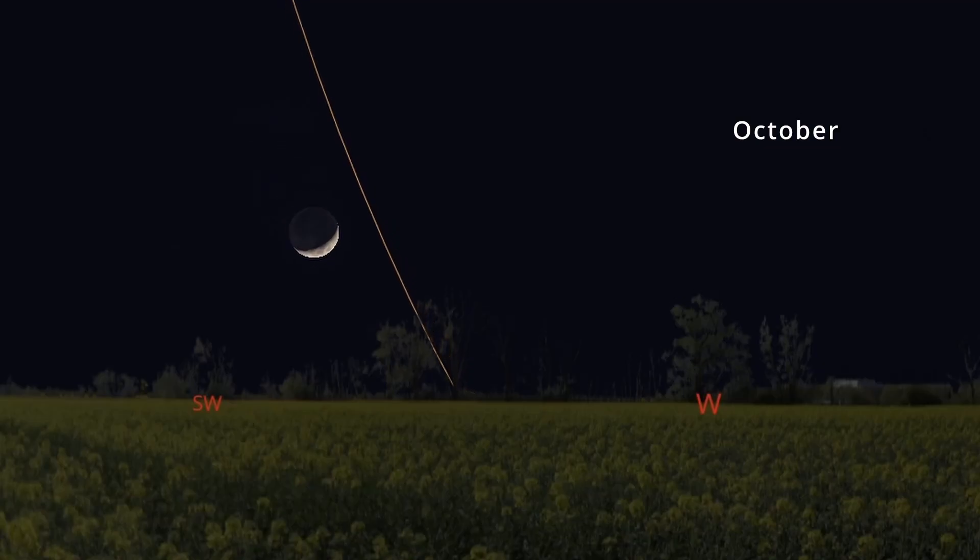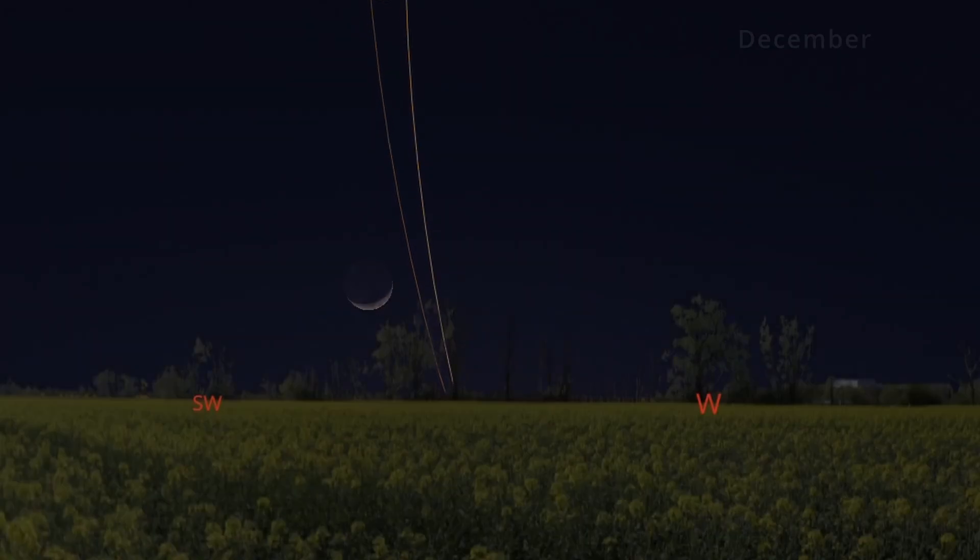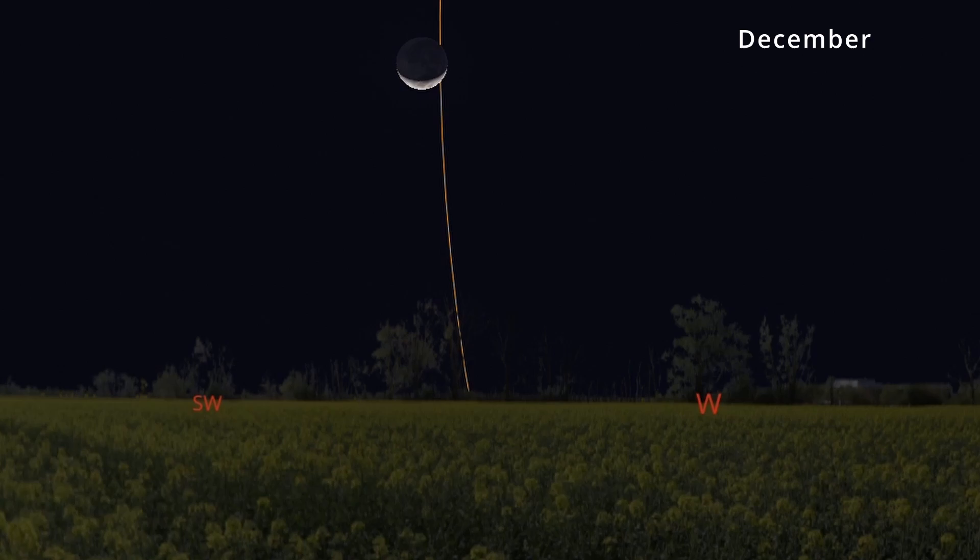Throughout the year, this crescent seems to move its orientation from bottom to sideways and back again. What could be causing this change in orientation?